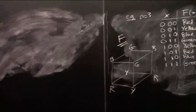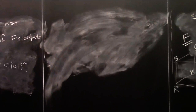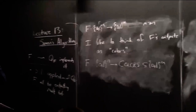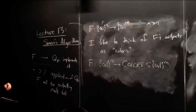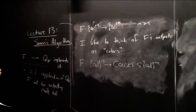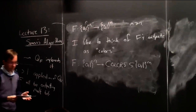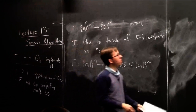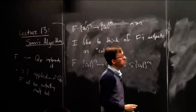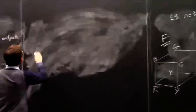As in the Bernstein-Vazirani problem, this mystery f to which you have circuit access is not any old function — it has a special property. In Bernstein-Vazirani it was an XOR function and your goal was to figure out which one. In Simon's problem, f is also not just any function with a truth table of colors — it's going to have a special property called periodicity.